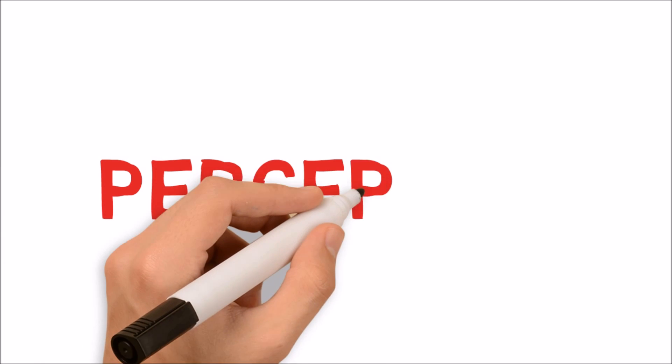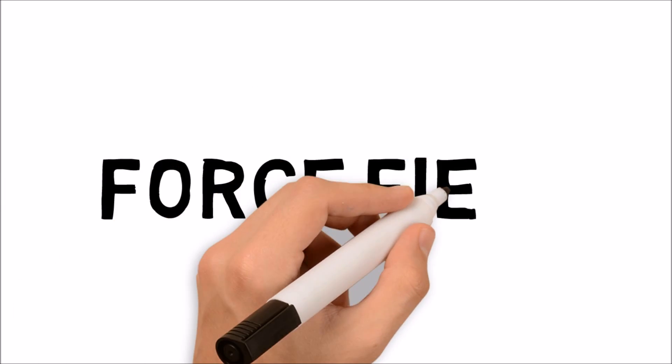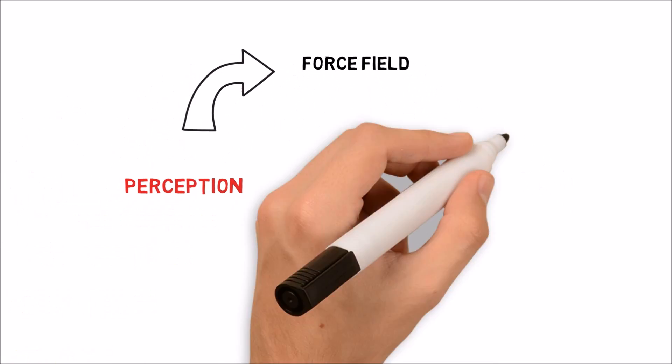Perception-action coupling is a loop. First we perceive. This perception leads to a force field where information initially perceived constrains the output of the skeleto-muscular system and therefore action.